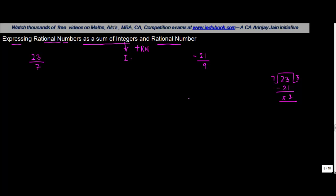So 23 by 7 can also be written as 3, which is the complete number, 2 which is the remainder that has to be written as the numerator, and 7 the divisor stays as it is. So 23 by 7 can also be written as 3 and 2 by 7 — 3 being the quotient, 2 being the remainder, and 7 being the divisor.